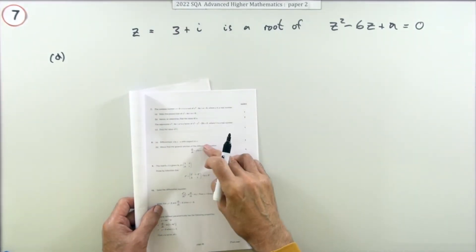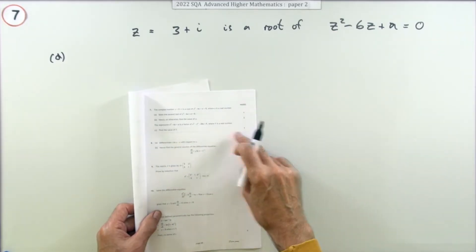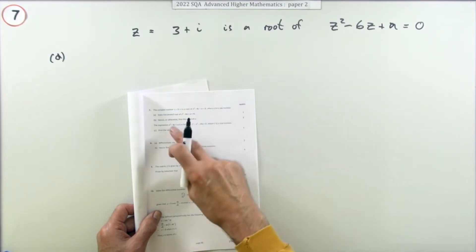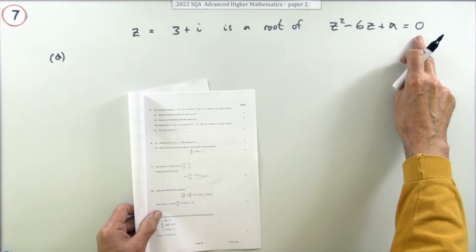Question 7 from the 2022 Advanced Higher Paper 2, complex numbers, four marks, three parts. First part just one mark because it just says state. It says this complex number is a root of this equation; if that's the case, state the other root.